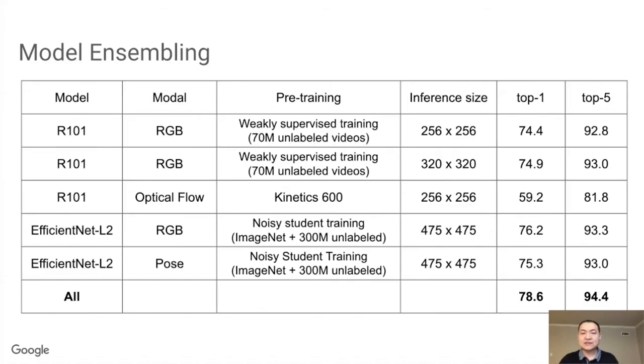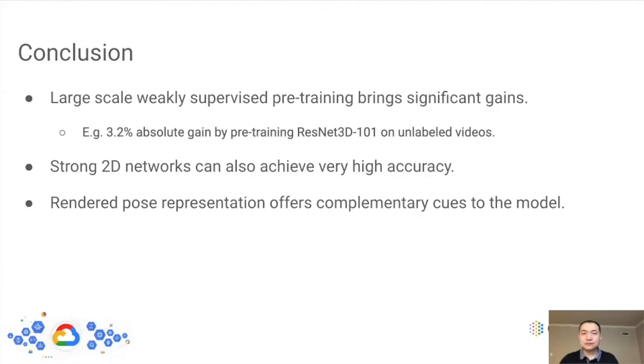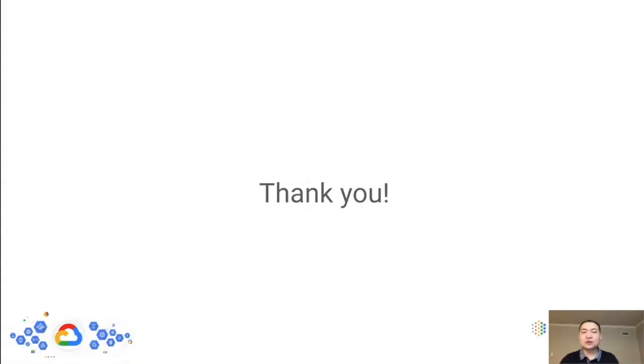We overlaid the rendered pose information onto the original RGB frames to generate a third stream, which shows complementary gain in later model assembling. Finally, we assemble multiple 2D and 3D models trained on different streams as our final model. The table shows the performance of all our models used in the final assembly. The 3D models are a ResNet 101 model trained on RGB frames, a similar ResNet 101 model trained on RGB frames, but with higher input resolution, and another ResNet 101 model trained on optical flow images. The 2D models are EfficientNet L2 models trained on RGB frames, and rendered pose images. An interesting find is that EfficientNet L2 on sampled frames performs the best among all our 2D and 3D models. This may tell us that Kinetic 700 is still a scene-focused dataset, and it may be worth considering better ways to capture motion cues in 3D convolutional networks. To summarize, our winner solution uses large-scale weakly supervised pre-training which is shown to be effective, strong 2D networks to capture context information in the scene, and a rendered pose stream, which provides complementary gains in the final model assembly. Thank you for your attention.